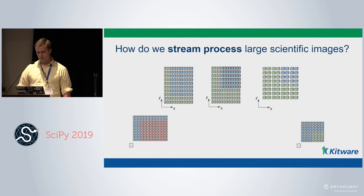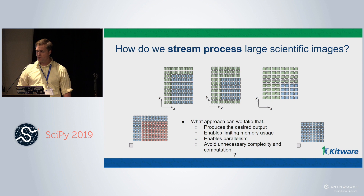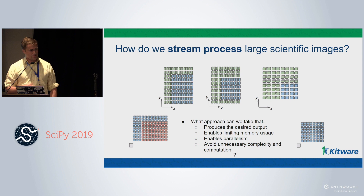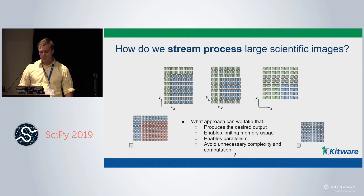The question is: we have this big data and this computation — what exactly do we do? How do we approach this problem so that we're getting the desired output — the same output we would get if we were not streaming — and how do we do it in a way that limits memory usage, enables parallelism, isn't too complex, and avoids recomputing things we don't need to?